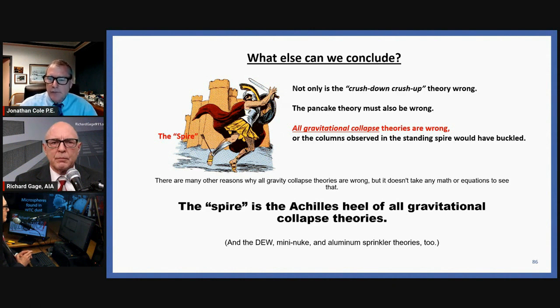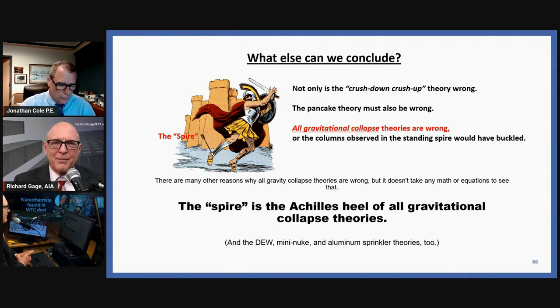Or it would have buckled and bent, and it didn't. It's also the Achilles heel for the DEW, the mini nuke, and the aluminum sprinkler theories too. Because again, that aluminum was long gone by the time we saw this.